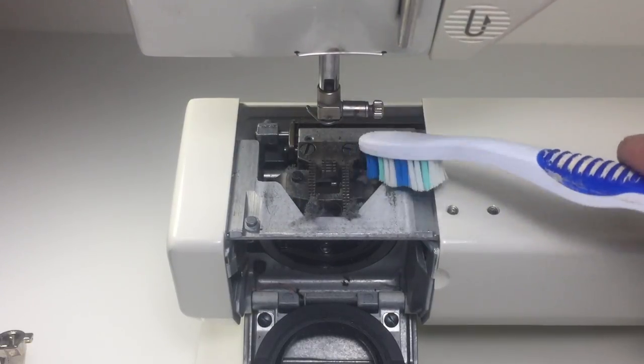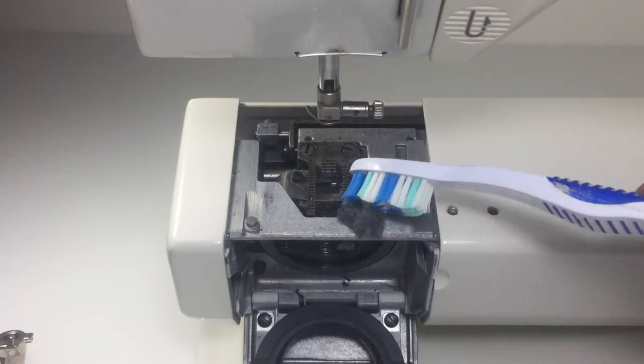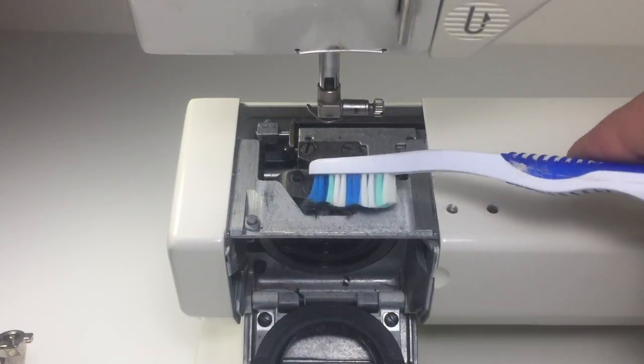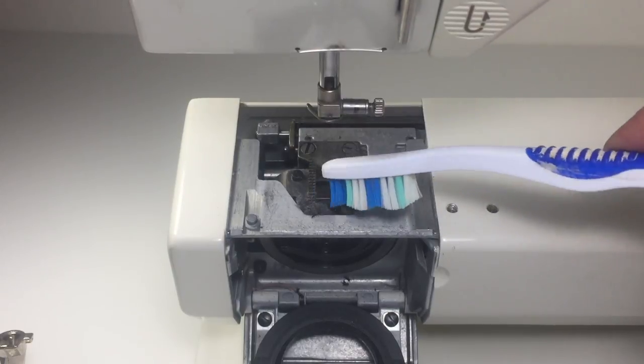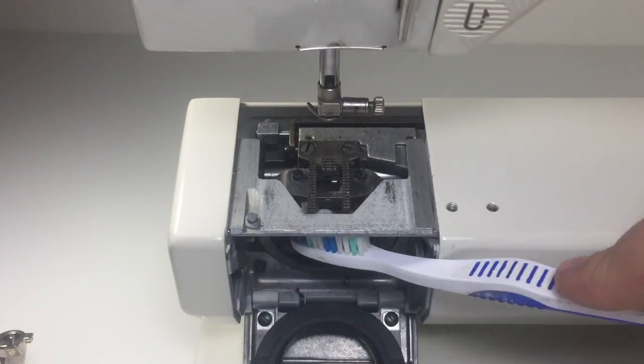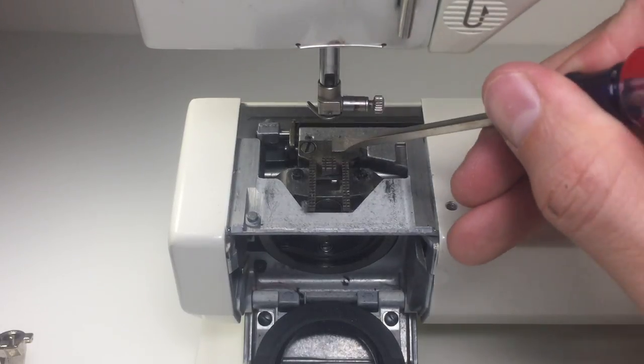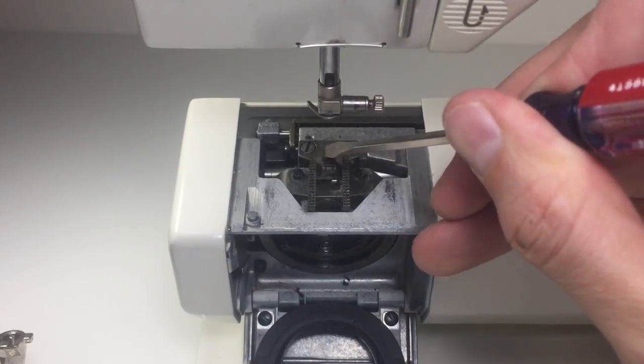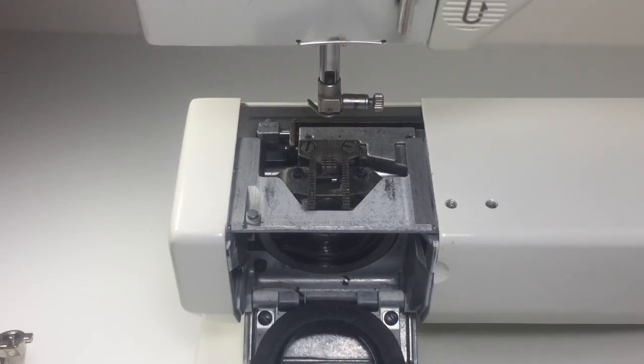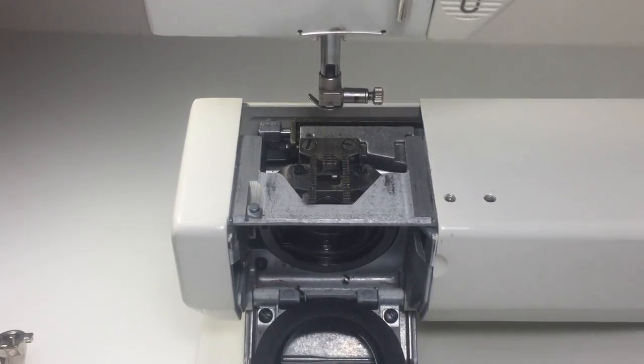If there's too much lint built up in here your feed dogs won't travel the full distance in which they're supposed to. I'm going to gently scrape the top of the feed dogs where lint may have been compacted between the feed dogs and the needle plate.